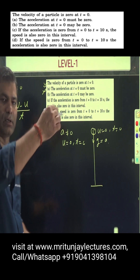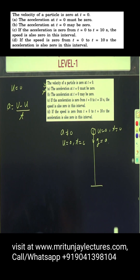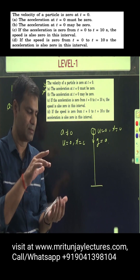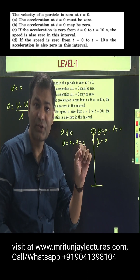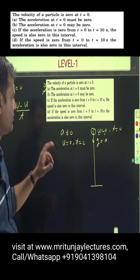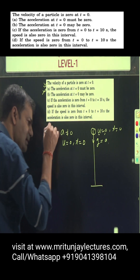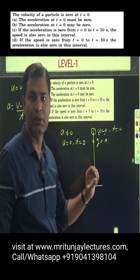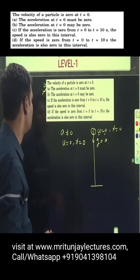In free fall, suppose a pen is at height h. At t=0, u is equal to 0, but what about acceleration due to gravity? So a is not 0 — a is equal to g. According to the question, acceleration must be 0, but no, it is not necessarily 0. So option A is not correct.